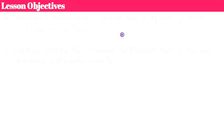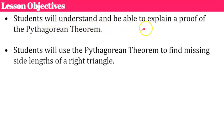Our objectives today are that you will understand and be able to explain a proof of the Pythagorean Theorem and that you will use the Pythagorean Theorem to find missing side lengths of a right triangle.